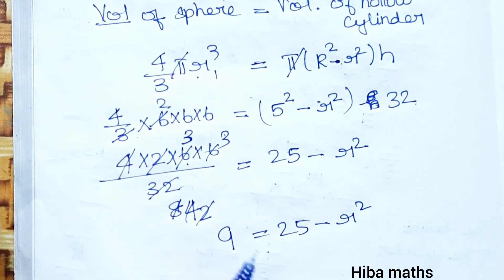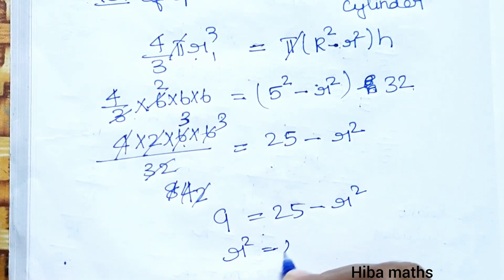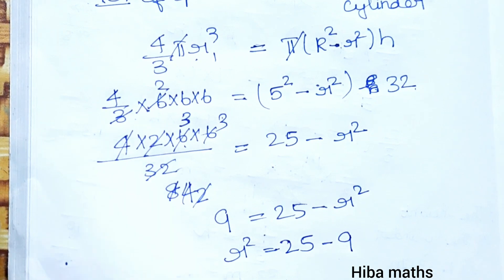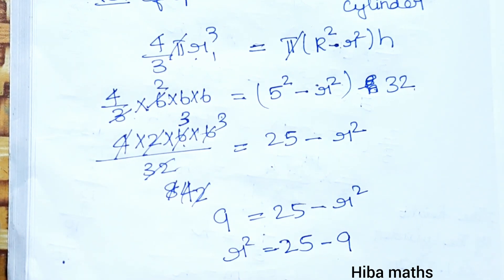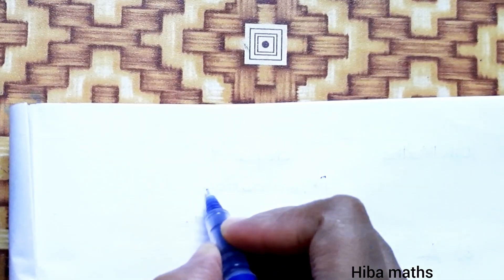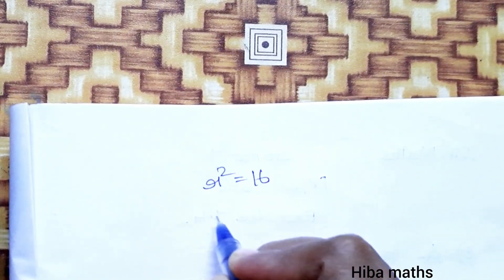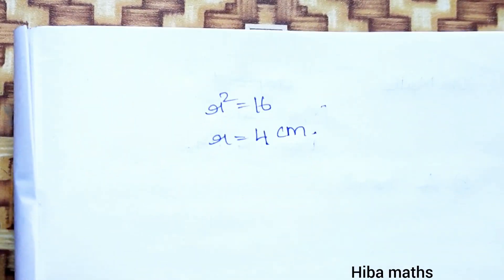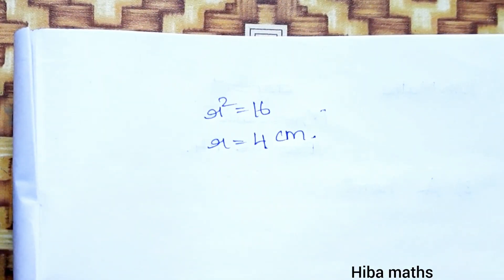Now we have minus r². r² equals 25 minus 9, so r² equals 16, and r equals 4 cm. Now we have internal radius and external radius.